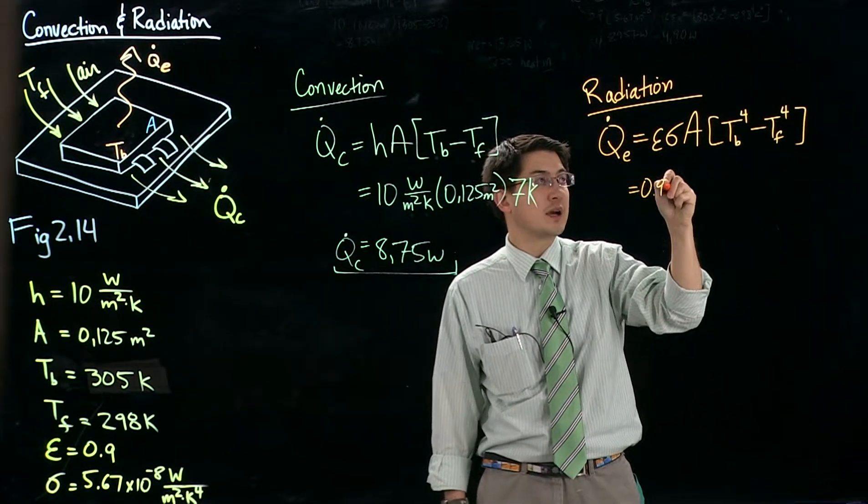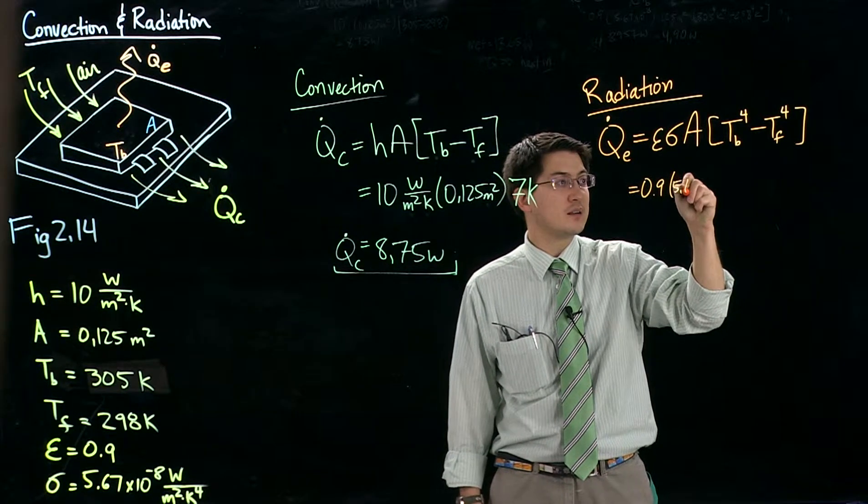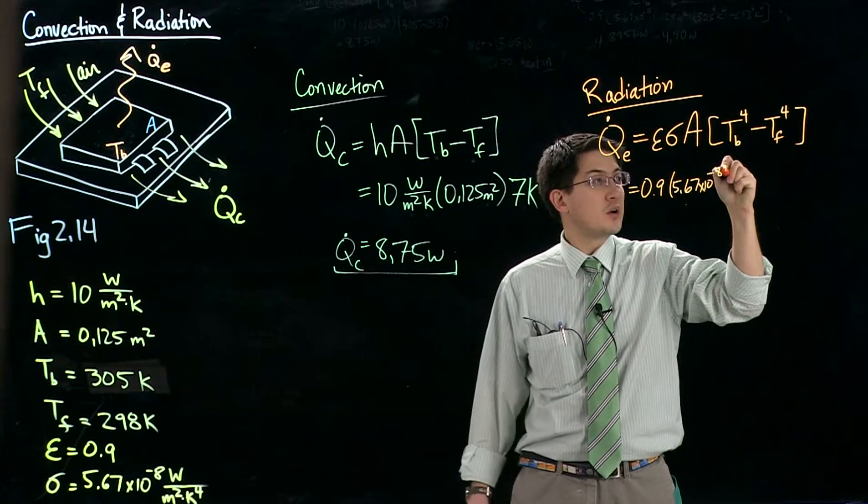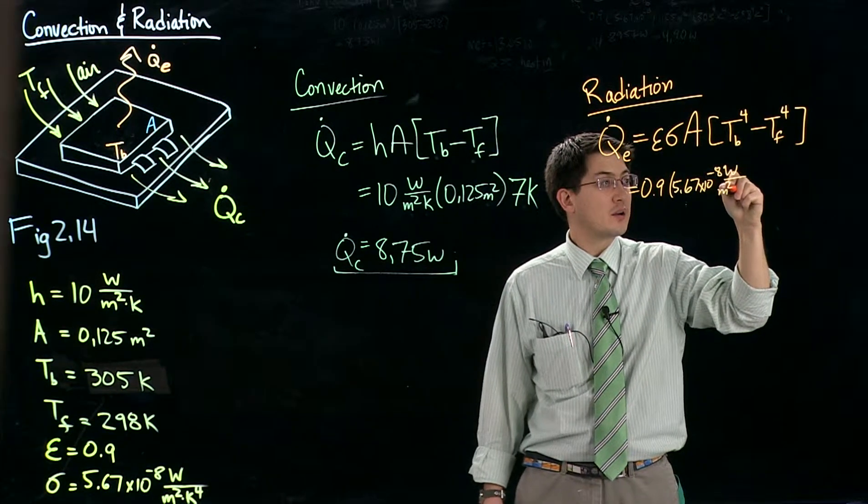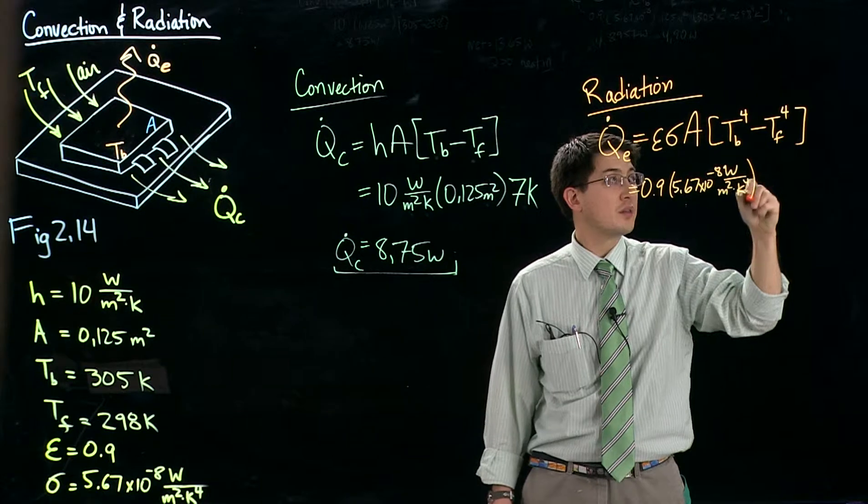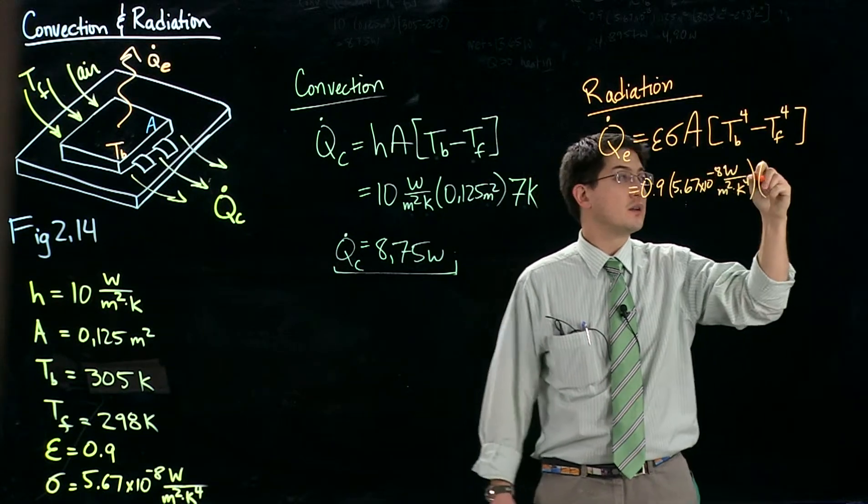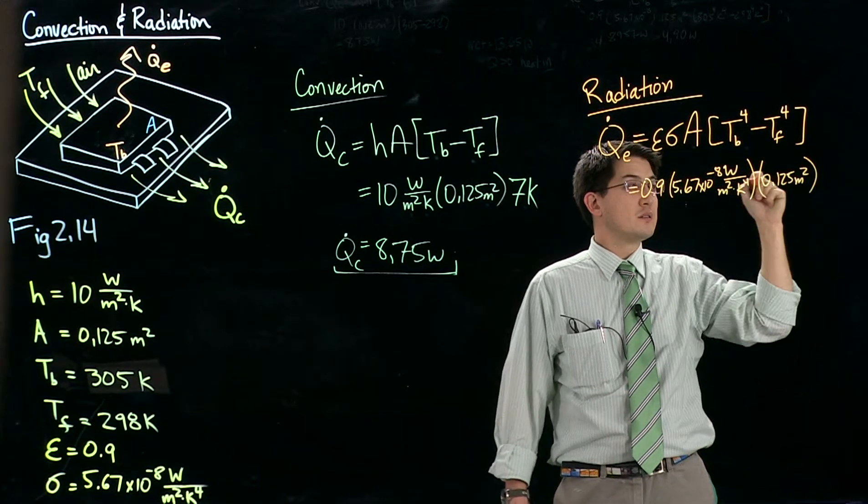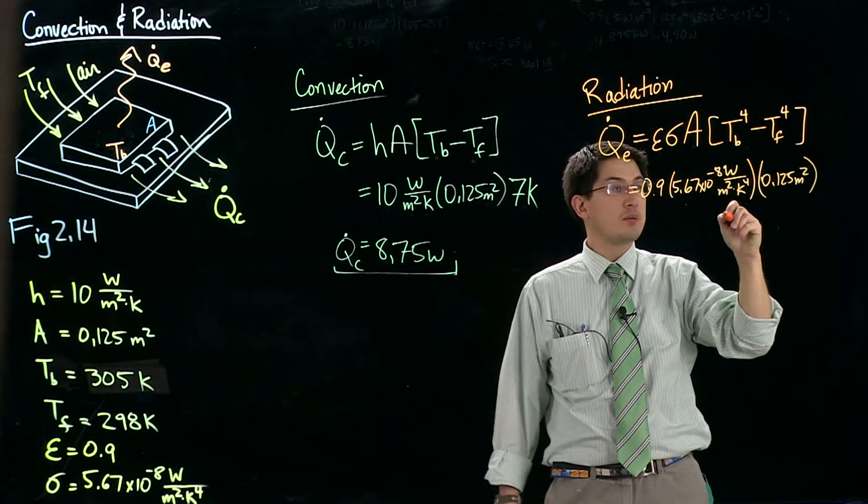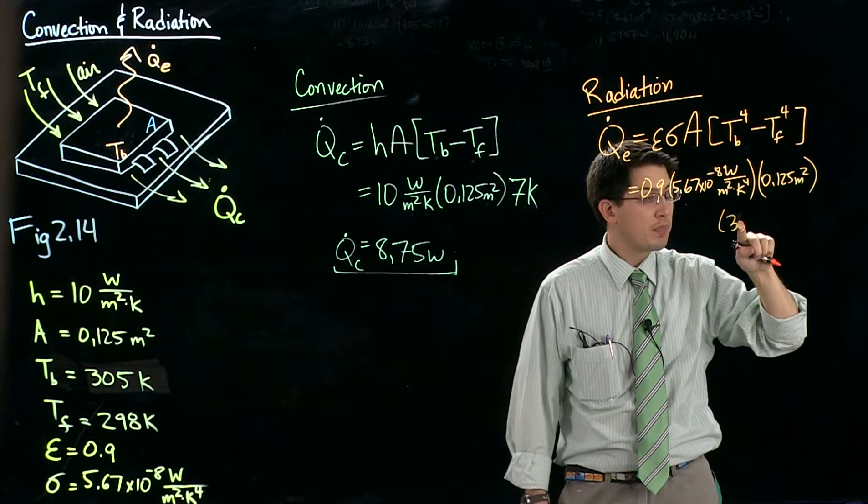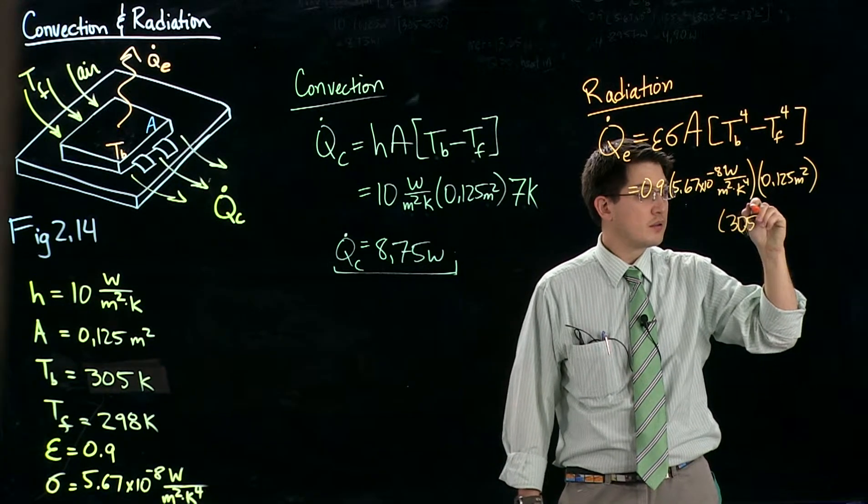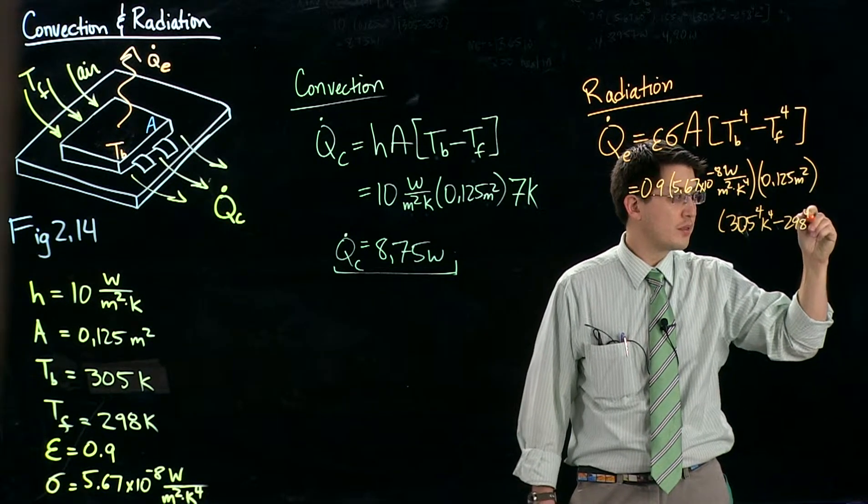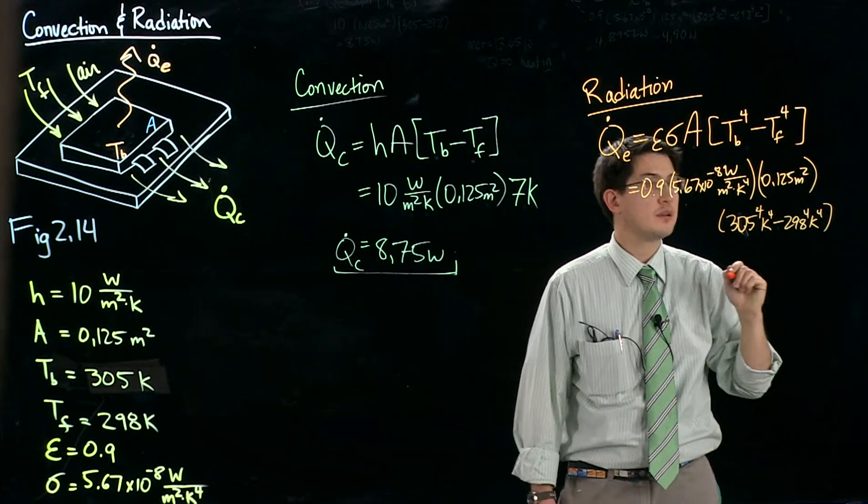Emissivity is 0.9. Stefan-Boltzmann constant is 5.67 times 10 to the minus 8 watts per square meter kelvin to the fourth. Area 0.125 square meter, times 305 to the fourth kelvin minus 298 to the fourth kelvin.